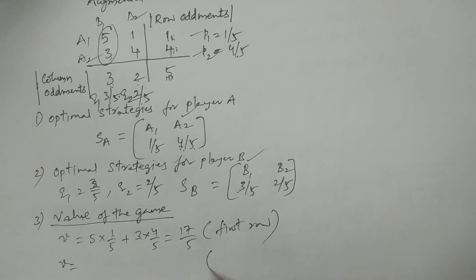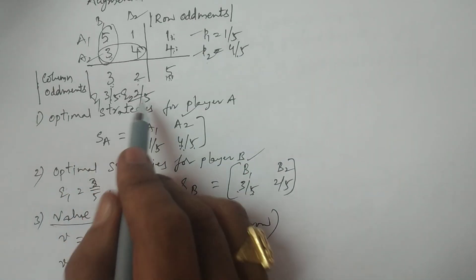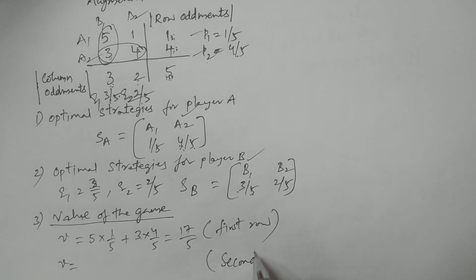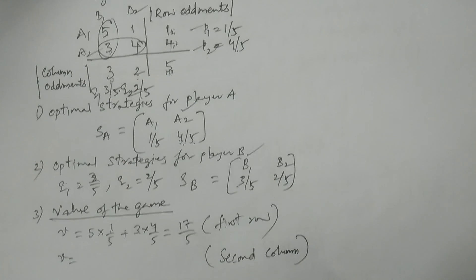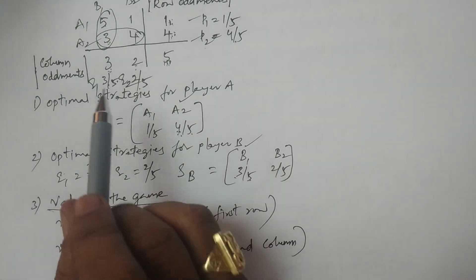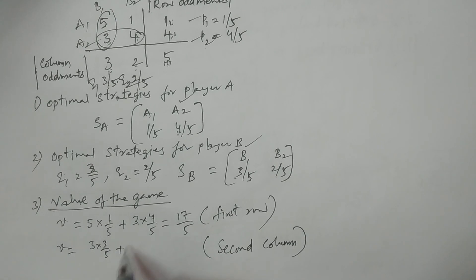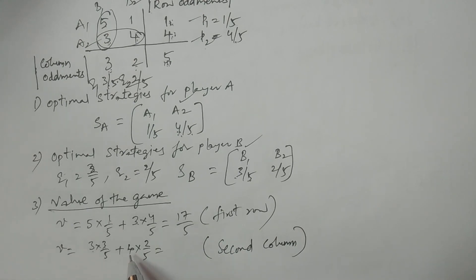The value of the game can be verified using any column. Using Column 2 with elements 1 and 4, probabilities 3/5 and 2/5: 1 × (3/5) + 4 × (2/5)... or using Column 1 with elements 3 and 4: 3 × (3/5) + 4 × (2/5) = 9/5 + 8/5 = 17/5. Both give 17/5, confirming the value of the game.